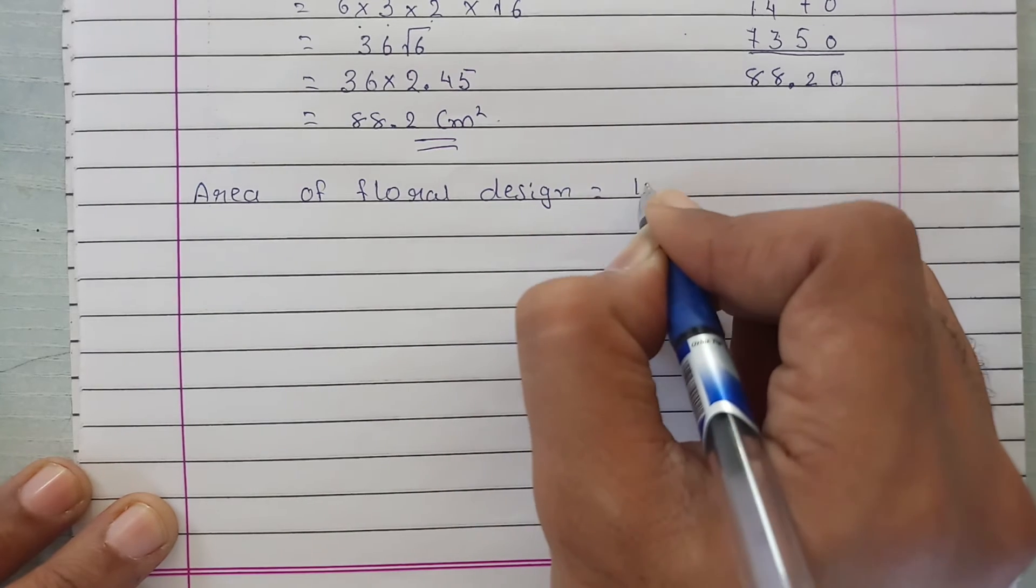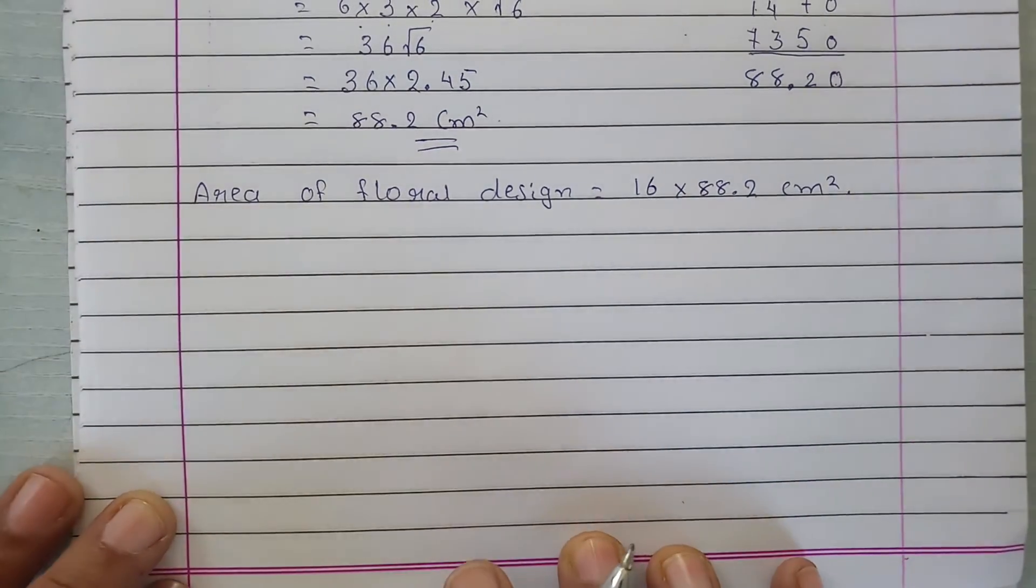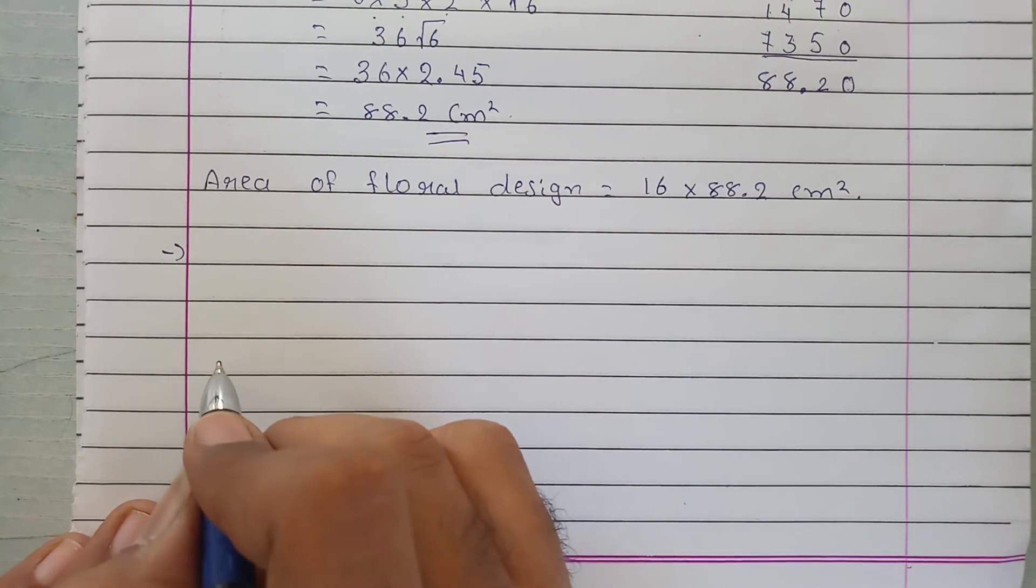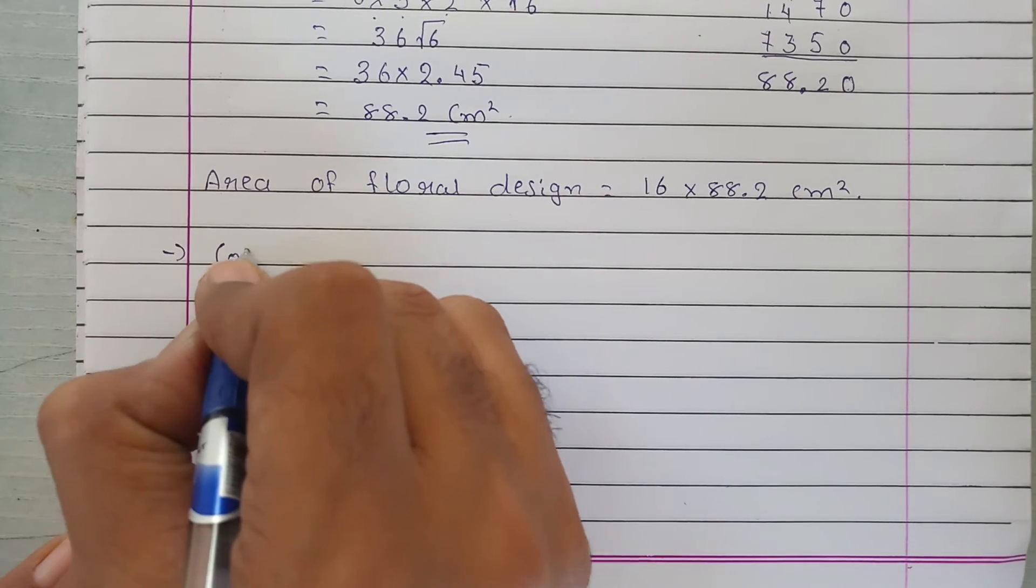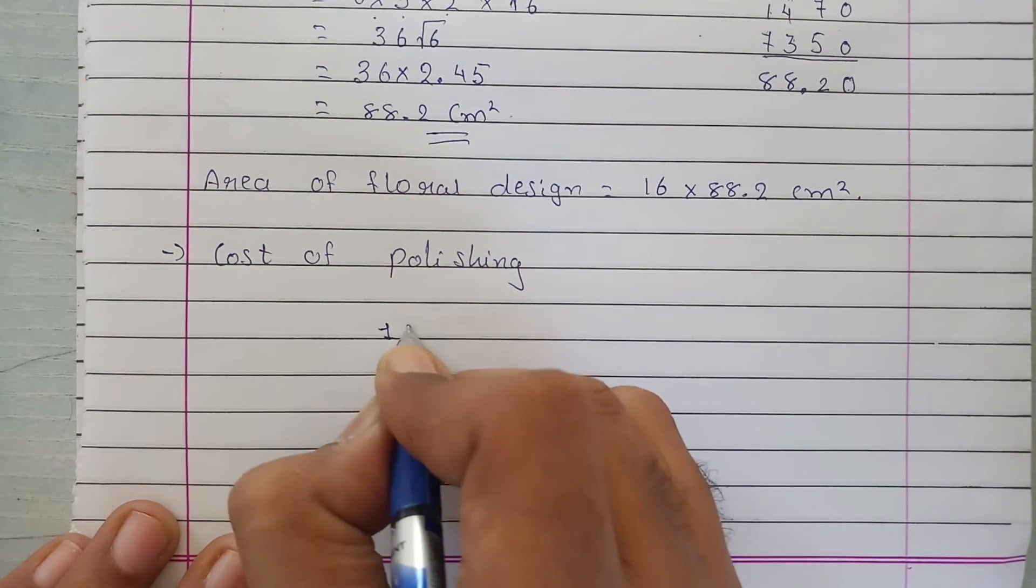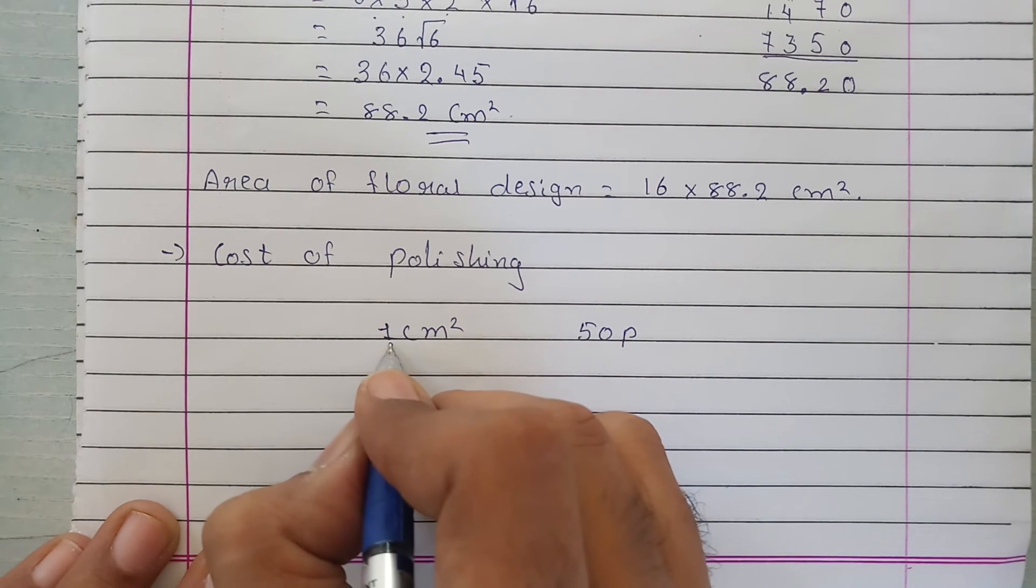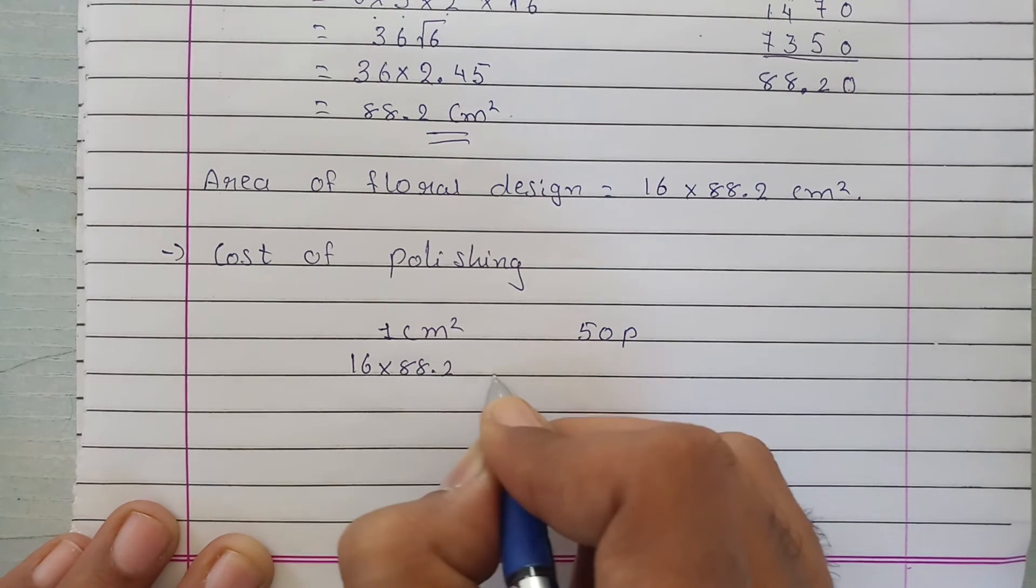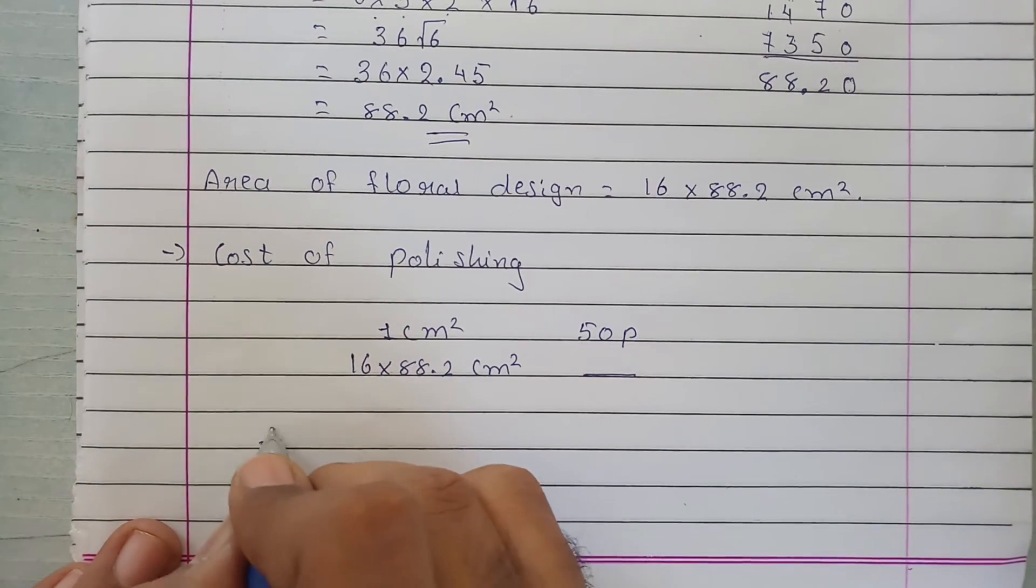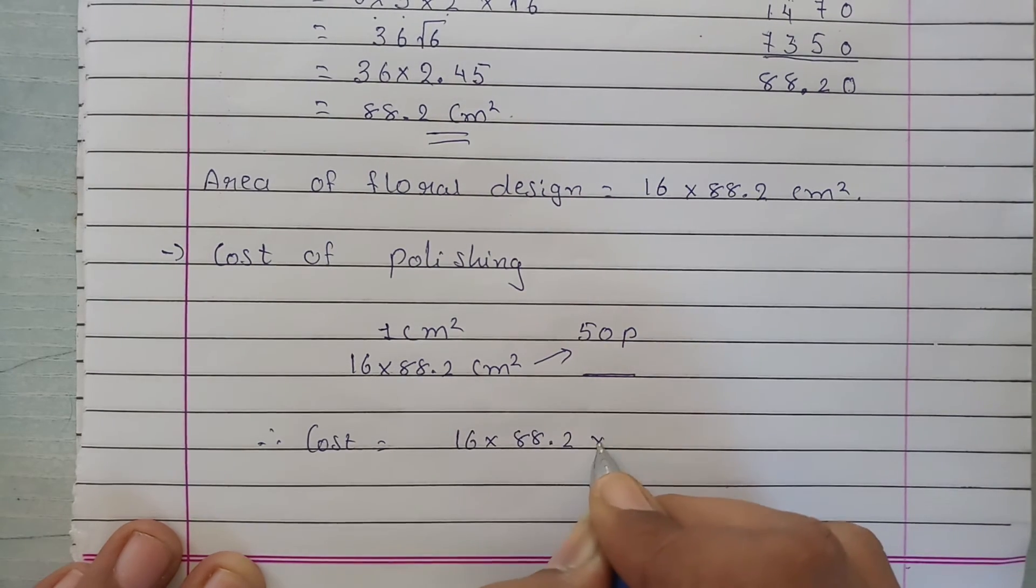Now we need the cost. The cost of polishing 1 cm squared is 50 paisa. To polish 16 times 88.2 cm squared, the cost equals 16 times 88.2 times 50.